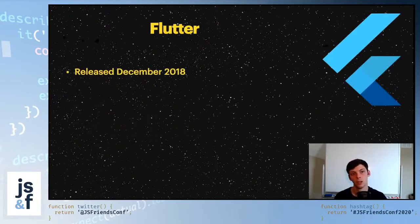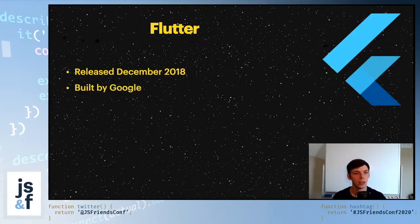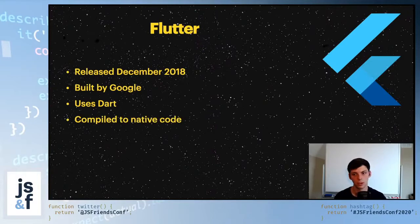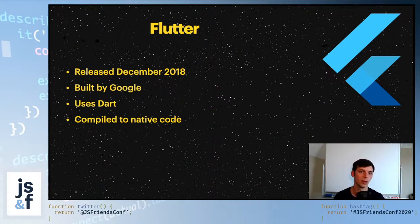Flutter was released in 2018, built by Google, uses Dart, and is compiled to native code. Dart is Java-like, and it gets compiled to native code.